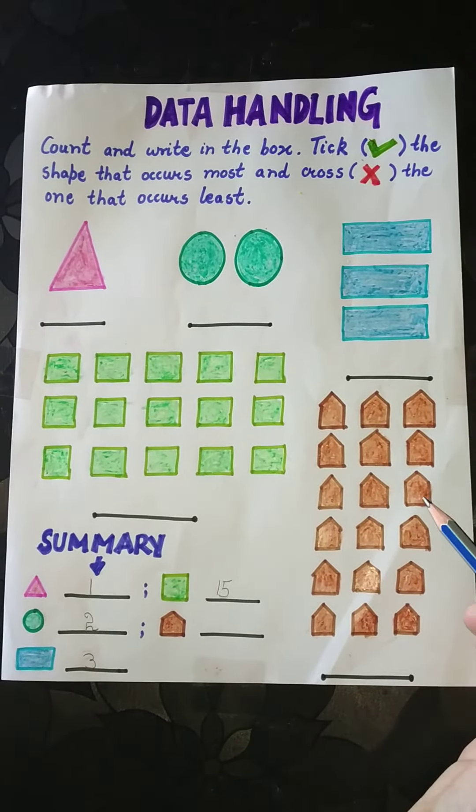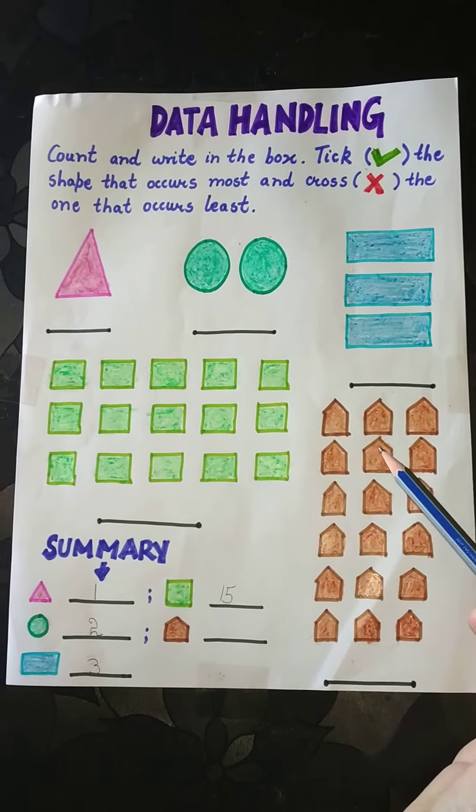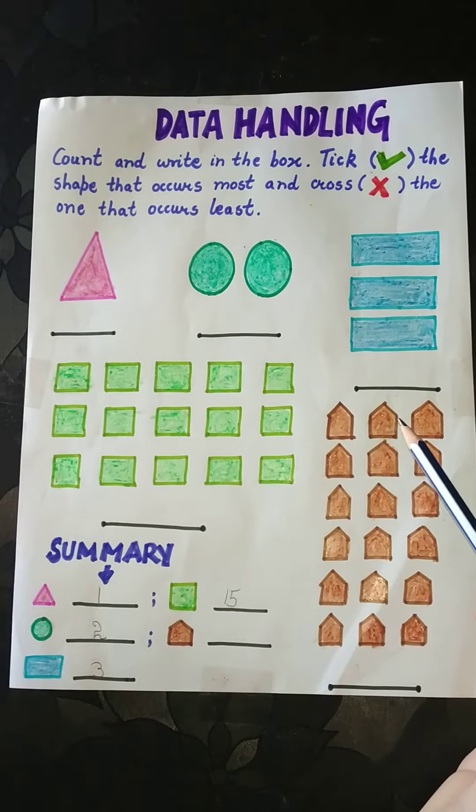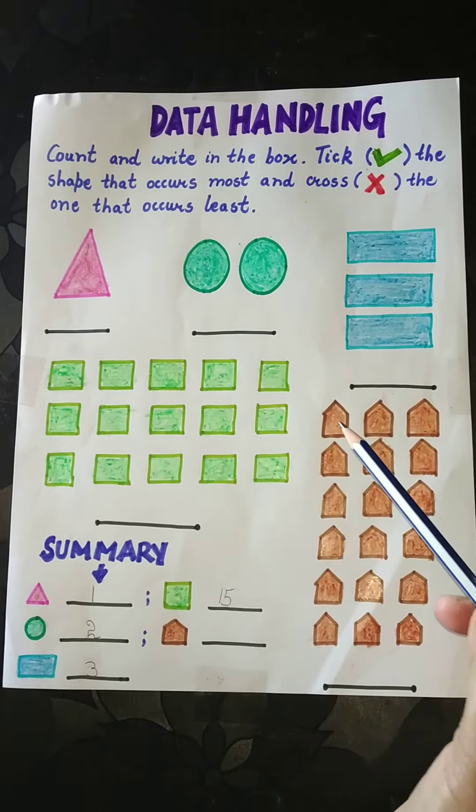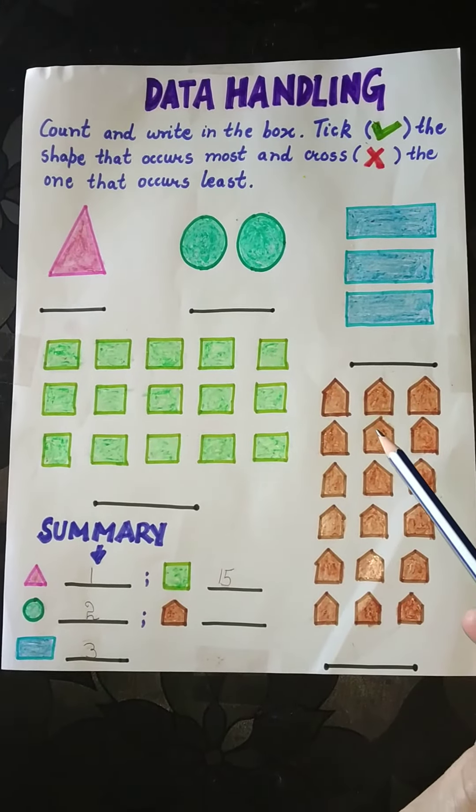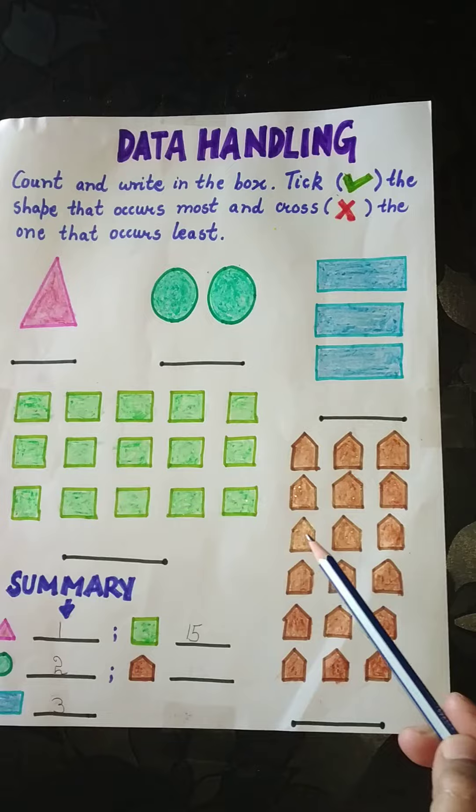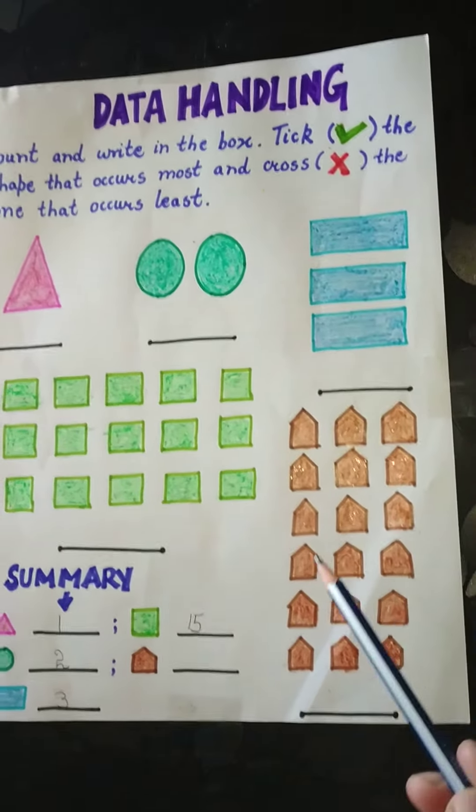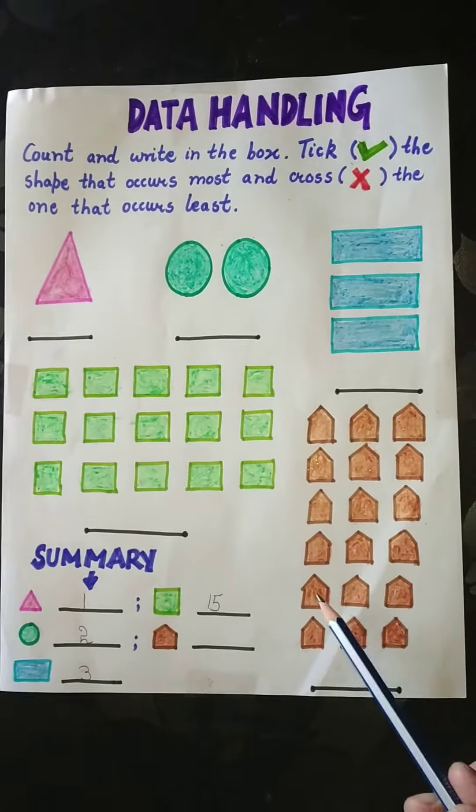Now we have a shape of pentagon. We have to count them and then write the number. Start counting with me children. One, two, three, four, five, six, seven, eight, nine, ten, eleven, twelve, thirteen.